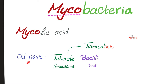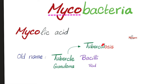In the good old days, which were not so good, Mycobacterium tuberculosis was known as the tubercle bacillus. Bacillus, because it's a rod. Tubercle, because it causes a tubercle, i.e. a granuloma. A condition of a tubercle is called tuberculosis.